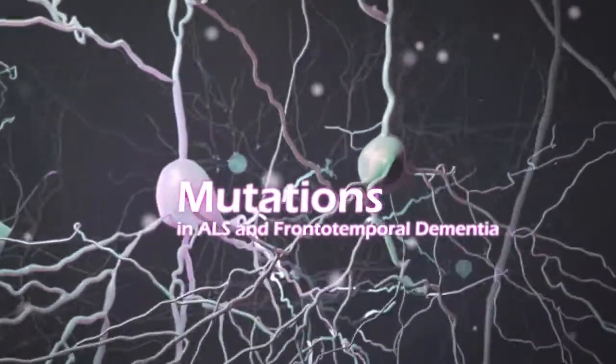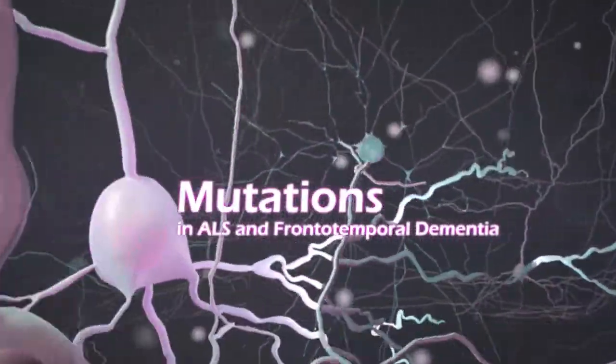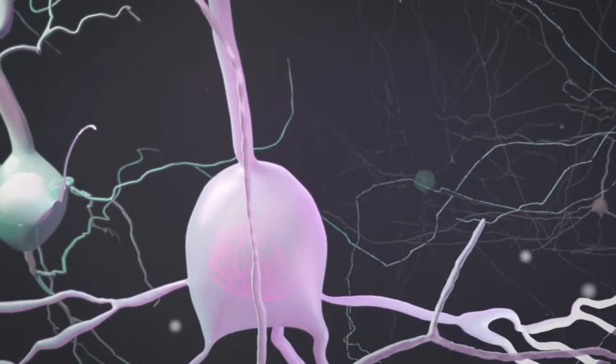Within human cortical neurons, a mutation can be found in the most common forms of hereditary ALS and frontotemporal dementia.